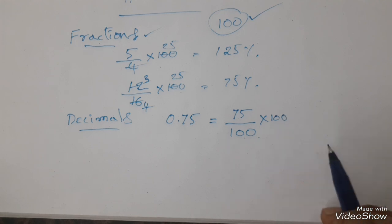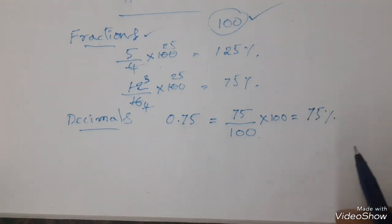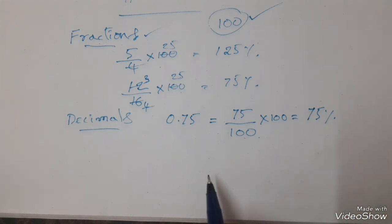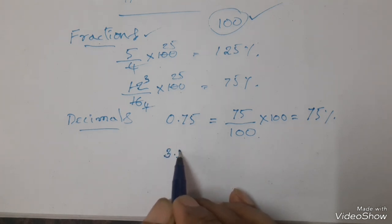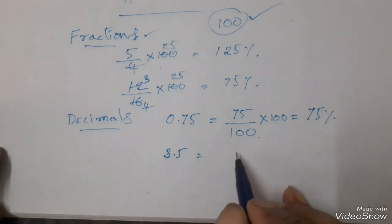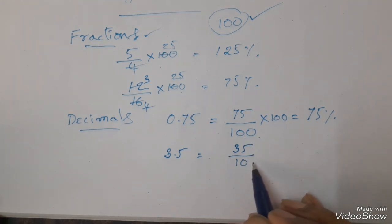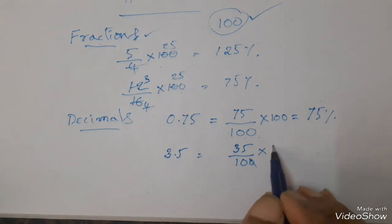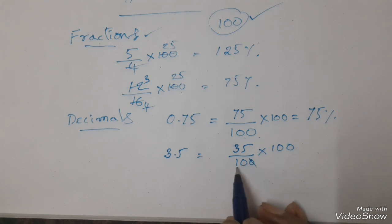So 0.75 converts to 75%. One more example: suppose 3.5 is given. You convert into percentage. So 3.5 means you can write 35 by 10. Into 100 — after the decimal one digit is there, so you write 10.